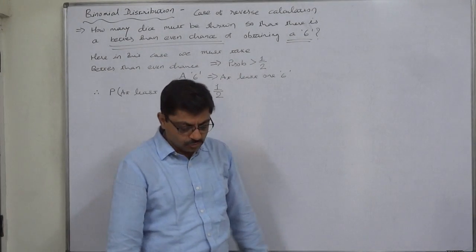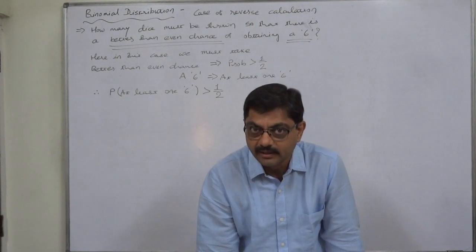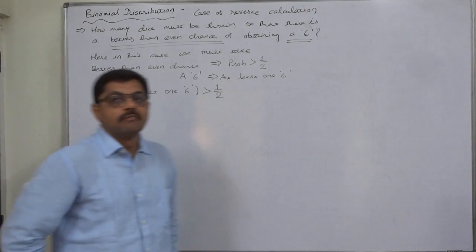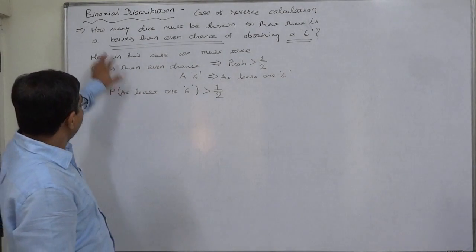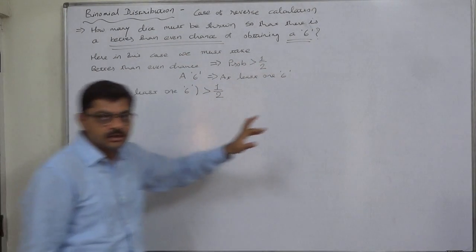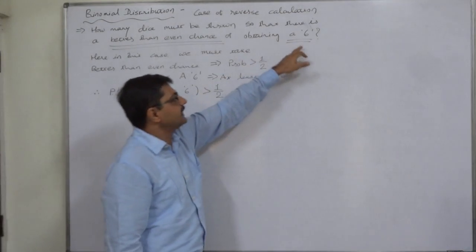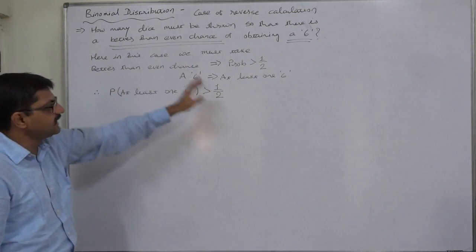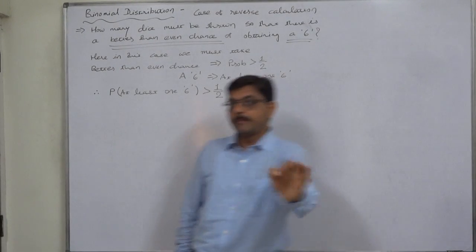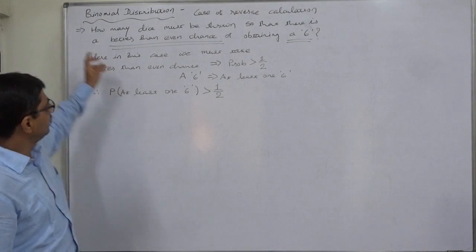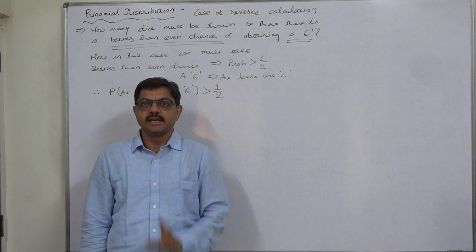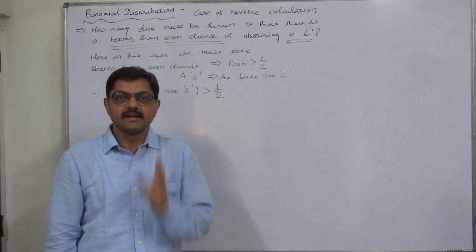Of obtaining a 6. To solve this problem, 'a 6' does not mean exactly one 6. It should be taken as at least one 6. So the full interpretation of 'a better than even chance of obtaining a 6' means: the probability of obtaining at least one 6 is greater than half. If any student can think of this interpretation, then only he or she can solve this problem correctly.